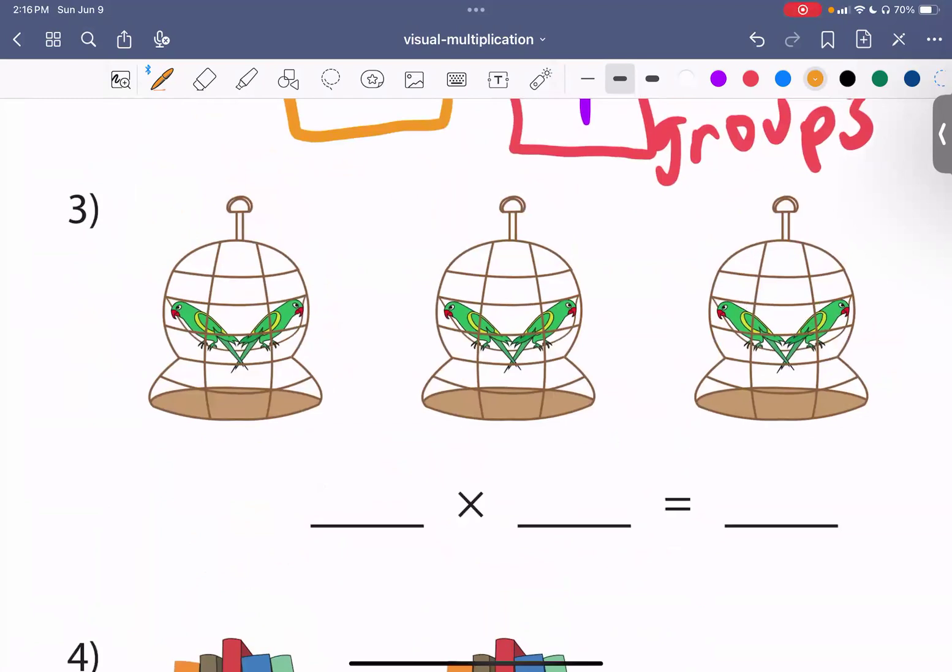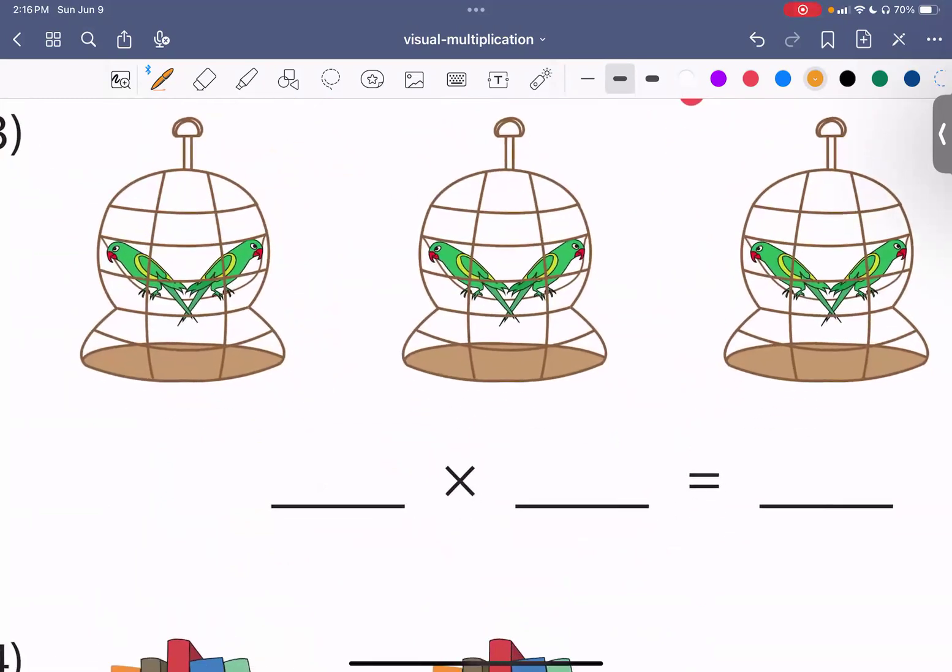Let's look at the next one. We have three bird cages. Now, in each bird cage, we have two birds. So, two times three. So, two birds times three cages gives us six birds.